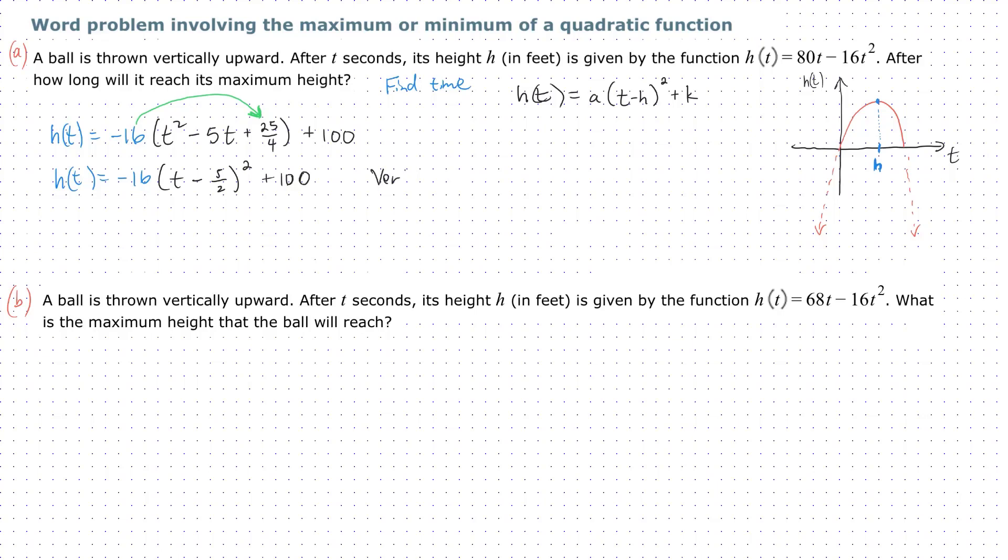We'll go ahead and read the vertex. The vertex is (5/2, 100). We need to answer the question: how long will it take to reach its maximum height? So h is 5/2. We have answered the question.